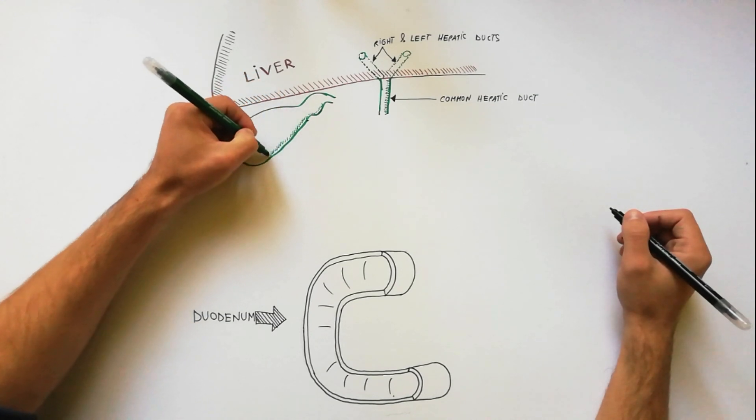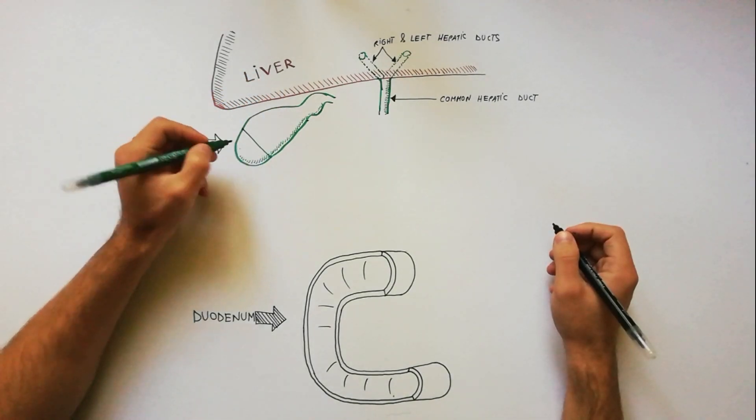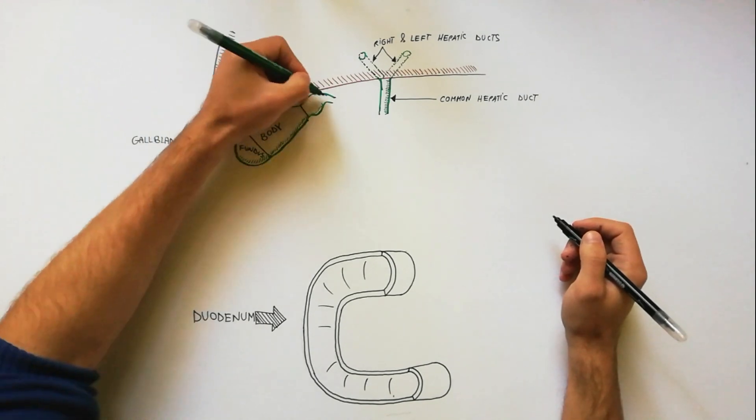The gallbladder is divided into the following three parts: fundus, body and neck.